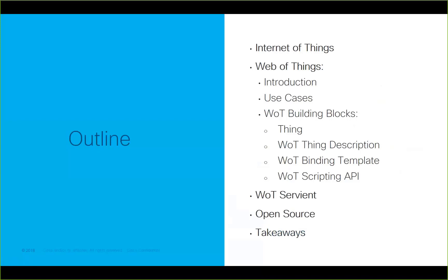Today's menu: first we will give an introduction to what is Internet of Things, then we will talk about Web of Things and give an introduction to that, the use cases, and the building blocks of Web of Things. There are four main building blocks: the thing, the Web of Things description, the binding template, the scripting API. Then we will talk about an entity called Servient, which acts as both client and server. We will mention two open sources, and then the conclusion.